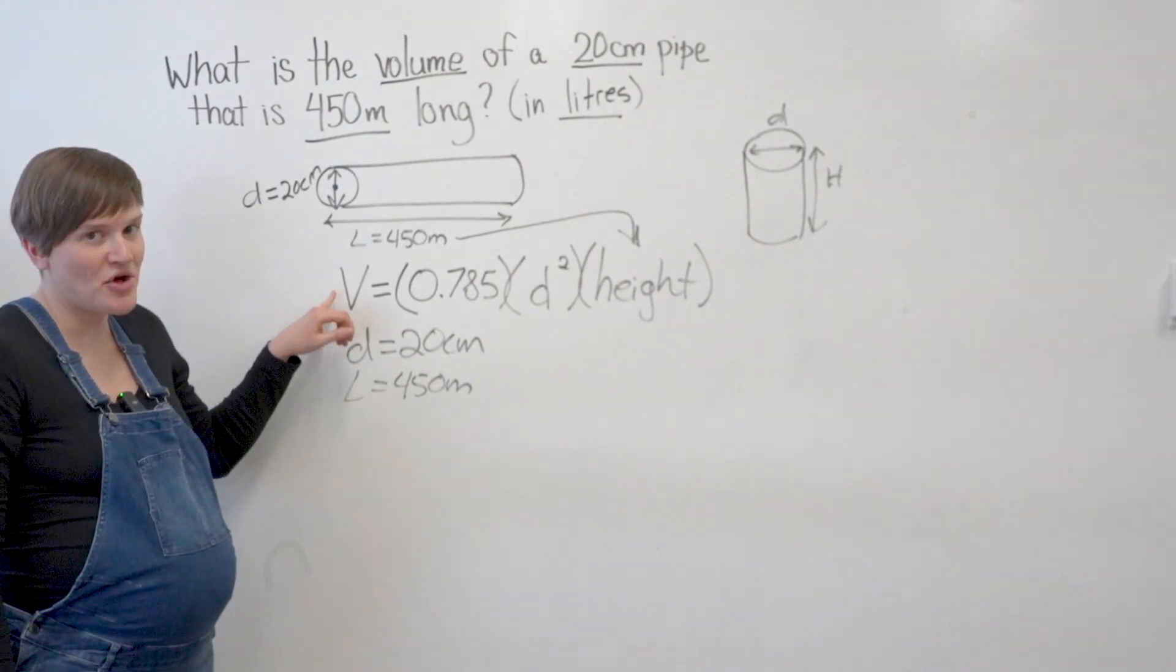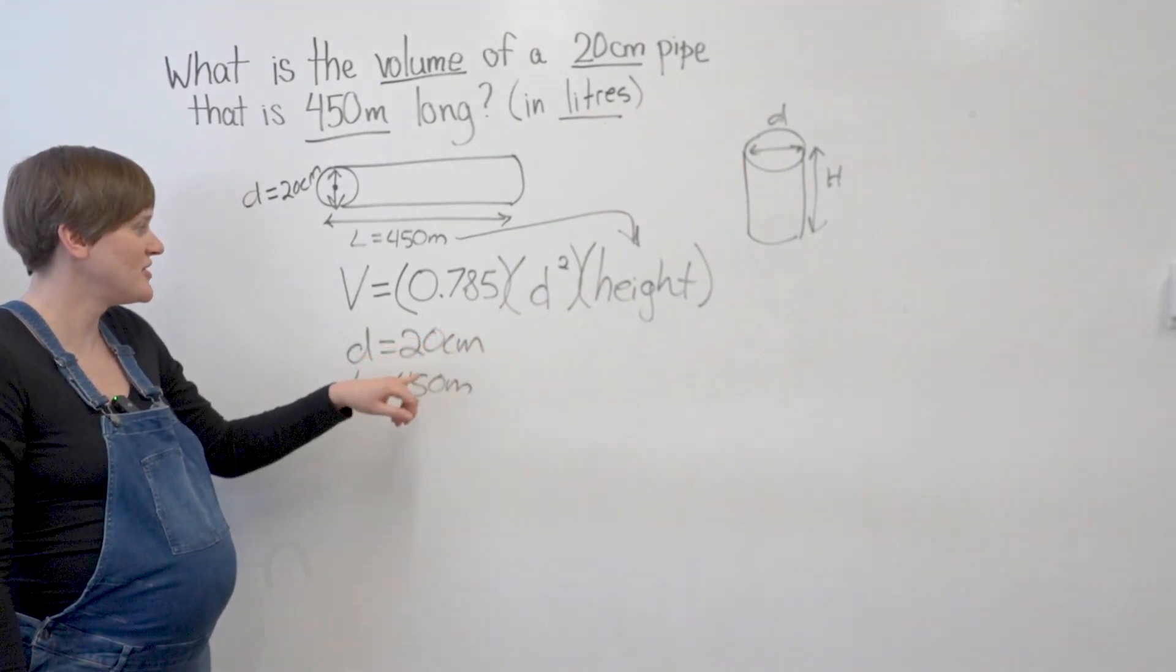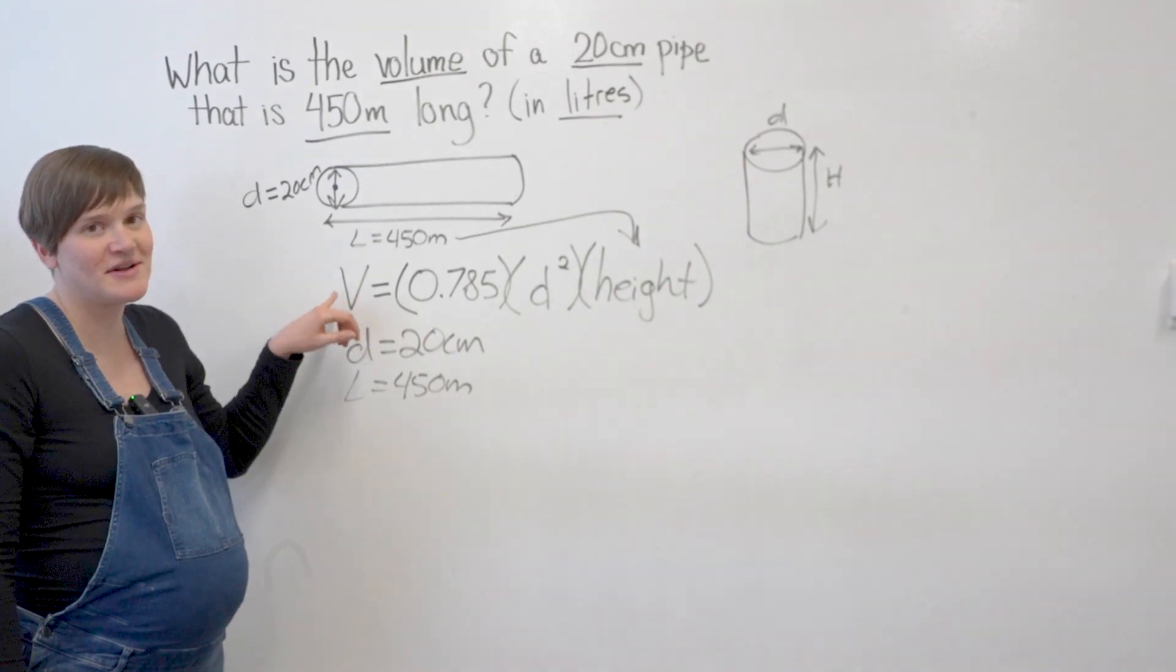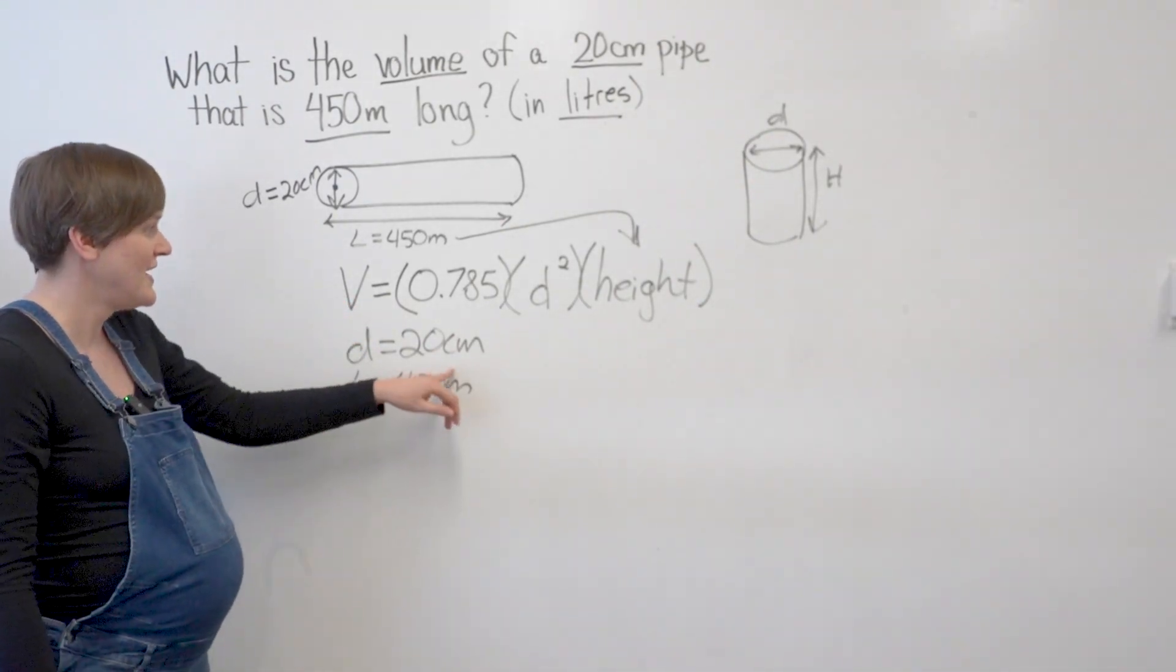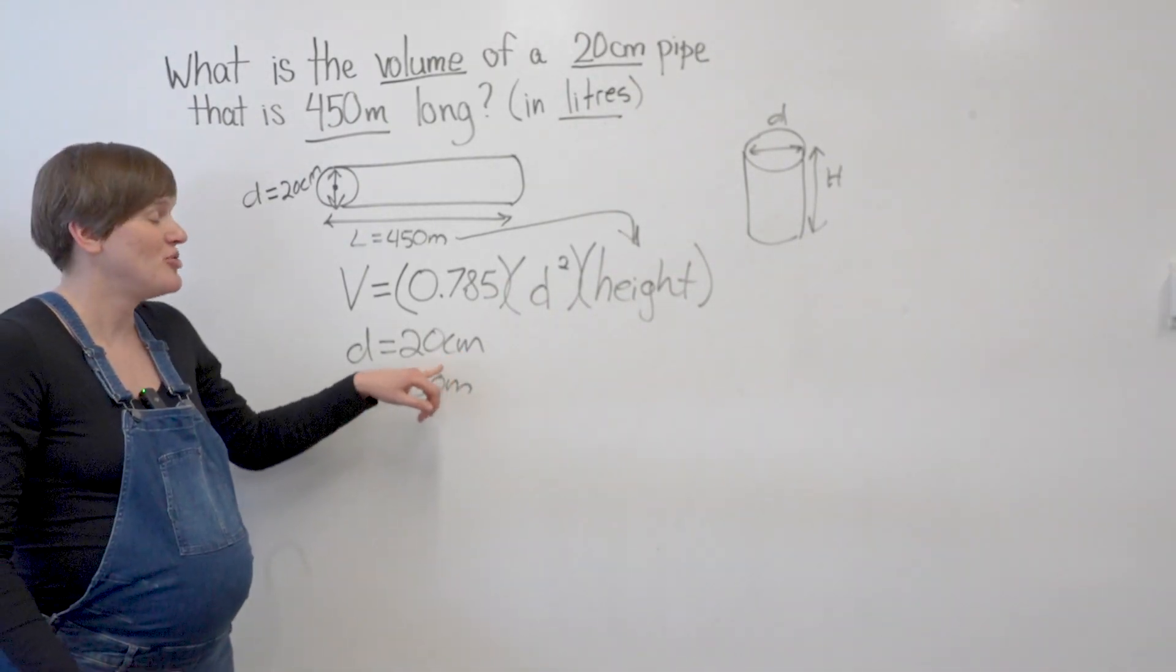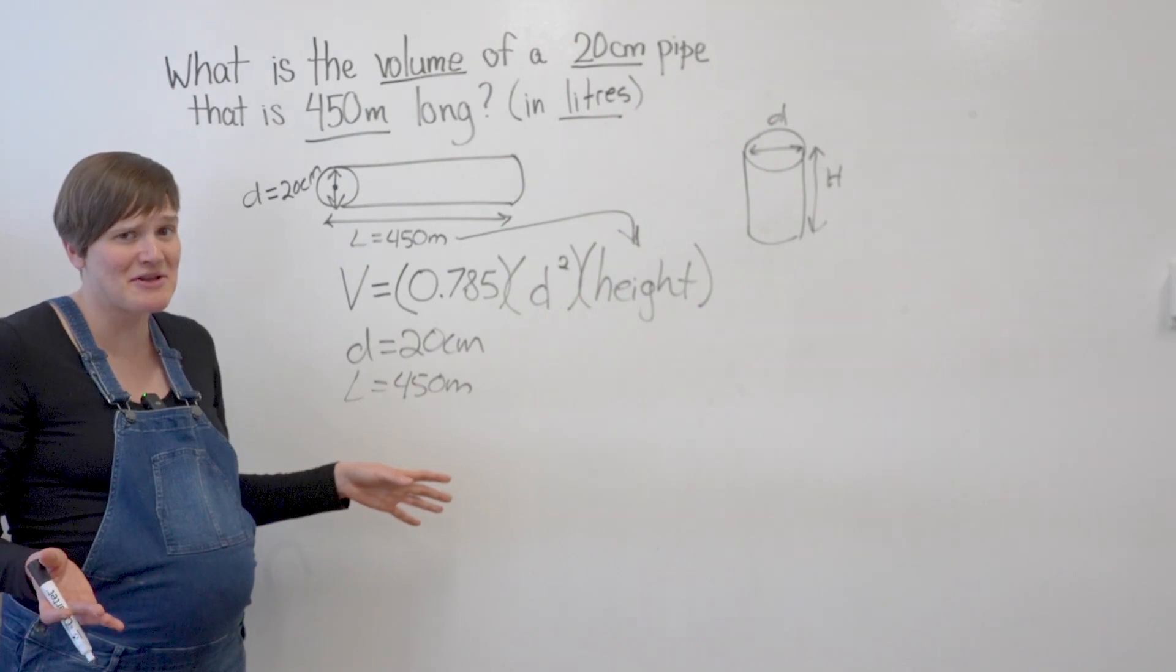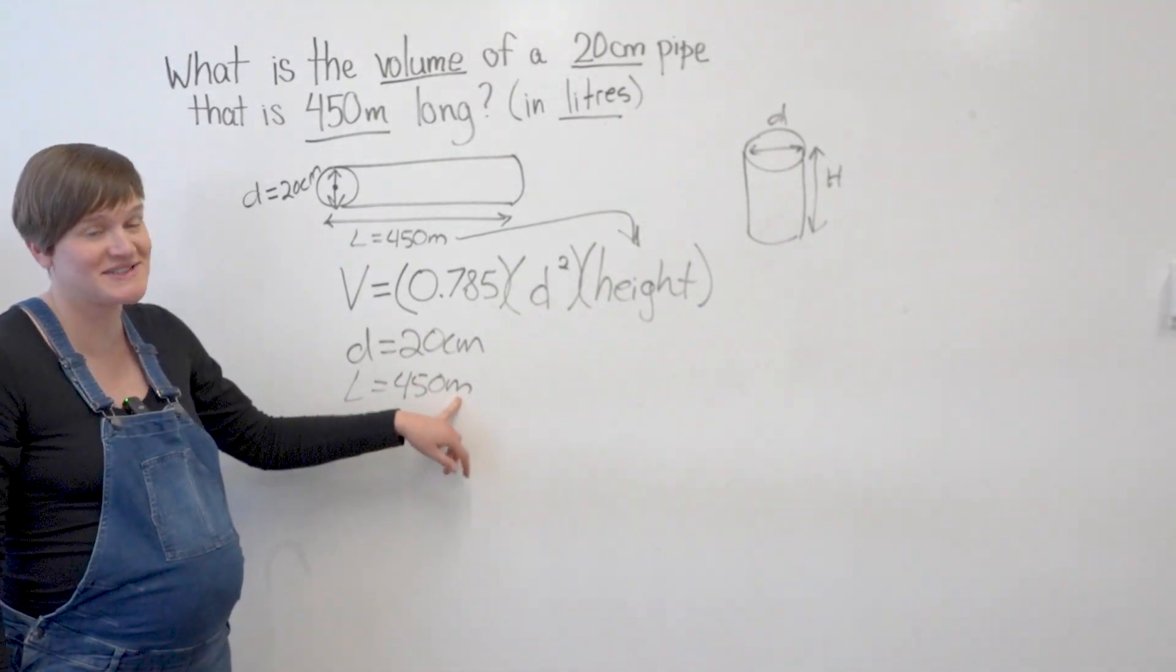So when we're calculating volume, we want to convert all of our different parameters into meters. That way, we're going to end up with an answer in cubic meters, which is a volume that we use in the water industry. If we converted both of these to centimeters, we'd get our answer in cubic centimeters, which means nothing to anybody. It's hard to convert that to liters. So we want to turn both of these to meters instead.